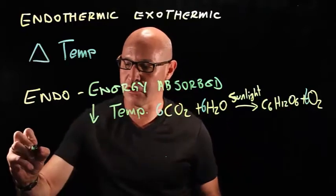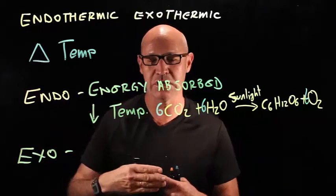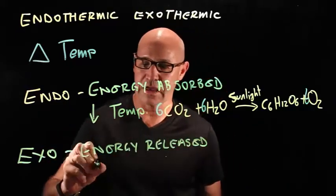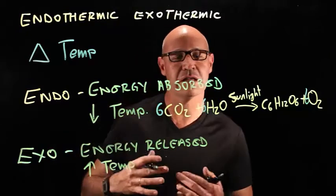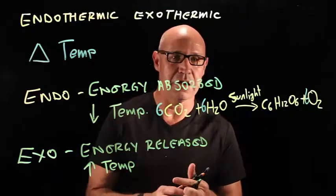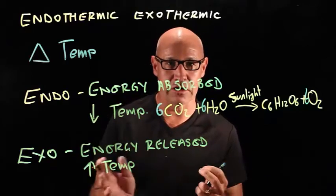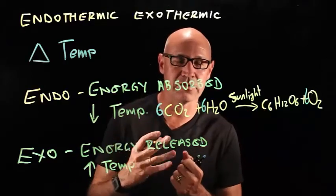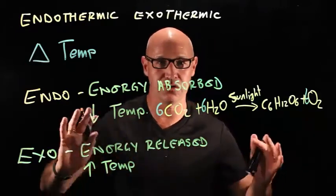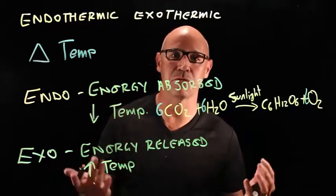Exothermic — think about 'exit,' so energy is exiting, energy is released, and the temperature increases. A classic example is combustion, or in this case aerobic respiration. Inside the mitochondria, we take glucose in the presence of oxygen, break it apart, and release energy. That energy is used to keep us warm and allow us to do our normal bodily functions.